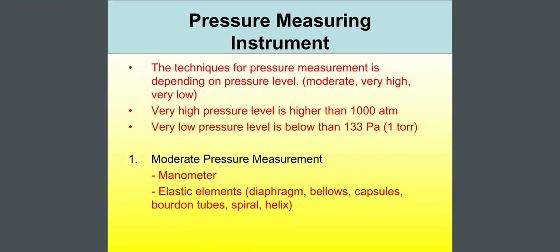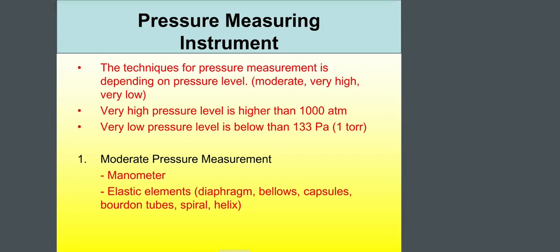Now, talk about the pressure measuring instrument. The techniques for pressure measurement is depending on pressure level, moderate, very high or very low. Very high pressure level is higher than 1000 atm and very low pressure level is below than 133 pascal or you can say below than 1 torr. So, number one, the moderate pressure measurement. Manometer. Elastic elements, diaphragm, bellows, capsules, bottom tubes, spirals and helix.